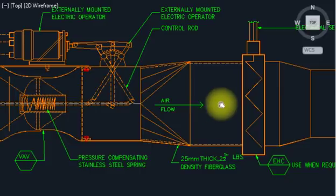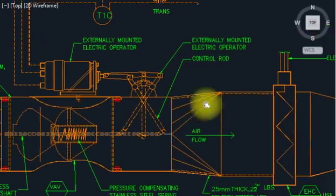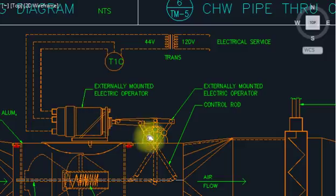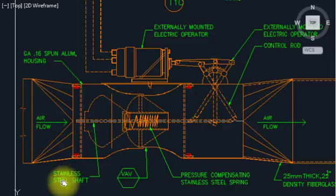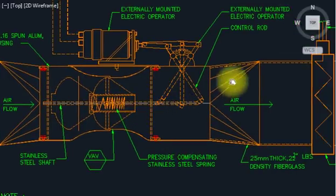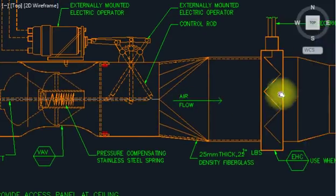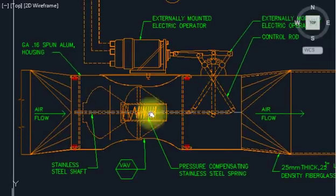When air passes through the electric heater coil, it becomes warm and goes into the room. So that is the function of VAV with an electric heater coil. There are two types of VAV available in the market: without an electric heater coil, and with an electric heater coil. In the diagram: 120 volt service comes in, then steps down to 24 volt for the controller. There is an electric operator motor to control the volume damper. Air comes in through a stainless steel shaft with a pressure-compensating stainless steel spring, and the damper blade moves to modulate CFM — from 200 up to 600, or fully closed.